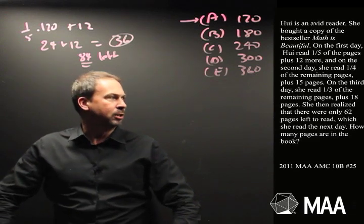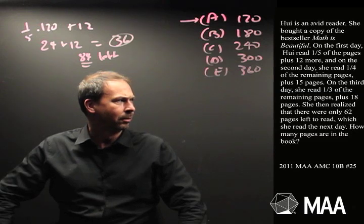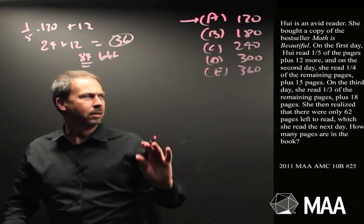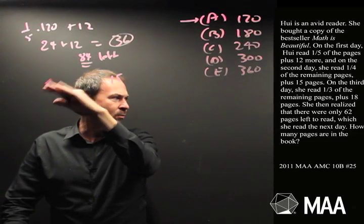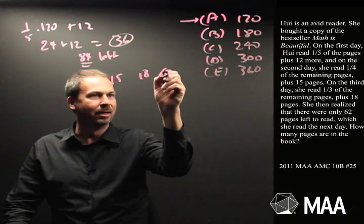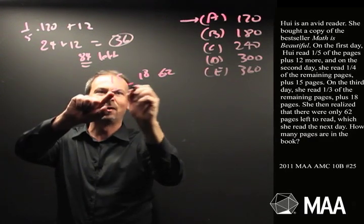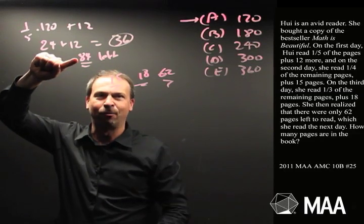So on day two, what does she do? She reads a quarter of the remaining pages plus 15 more. Oh, I'm looking at the numbers. She has to read 15 more plus some fraction. Day three, she has to read some other fraction and 18 more. And there are 62 pages left. So in this question, she's still got at least that many pages to read. And right now, we only have 84 pages left in the book.